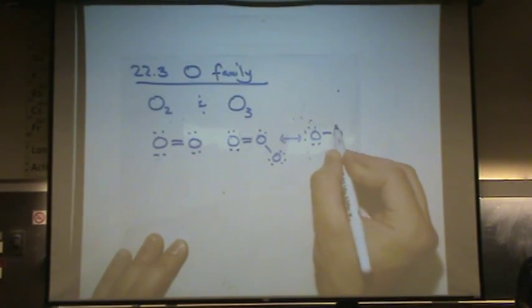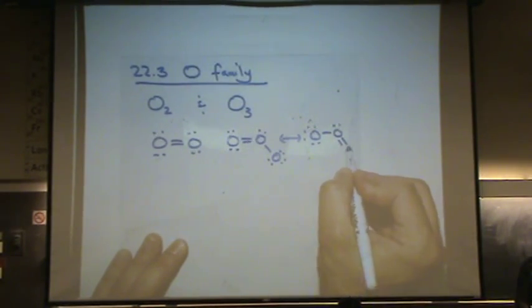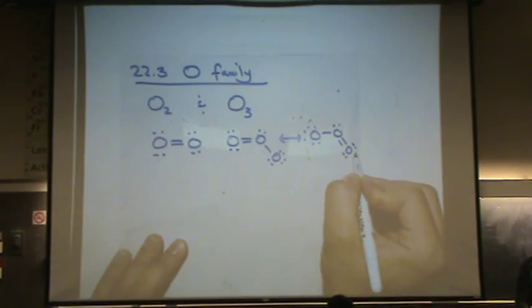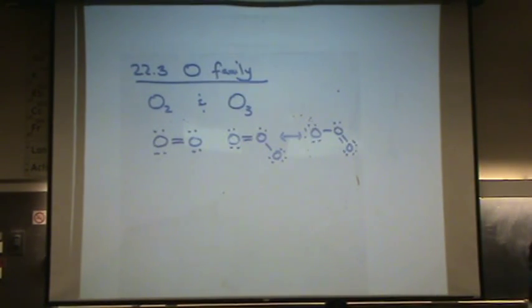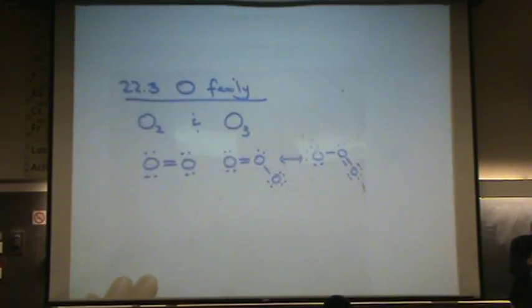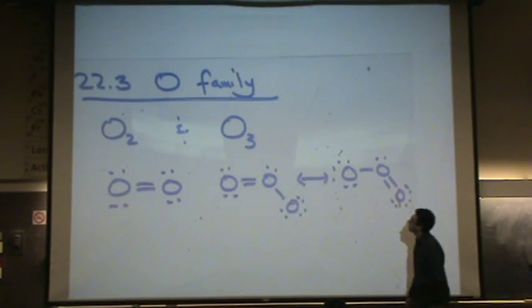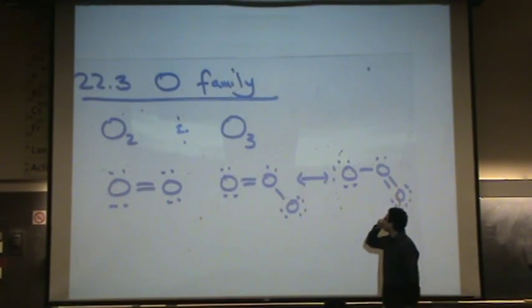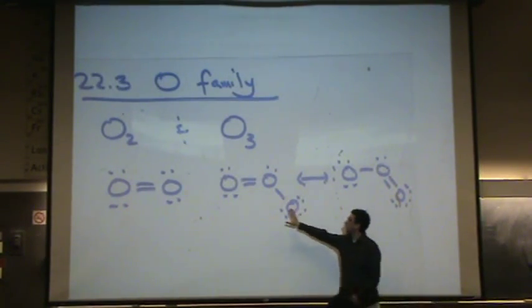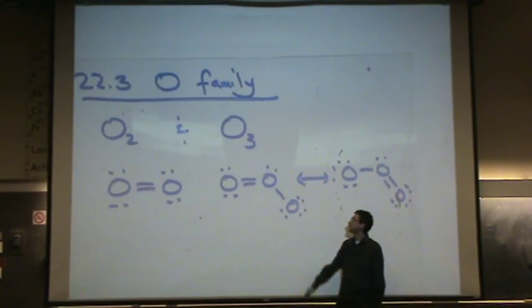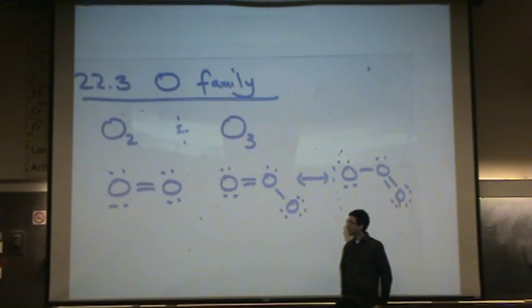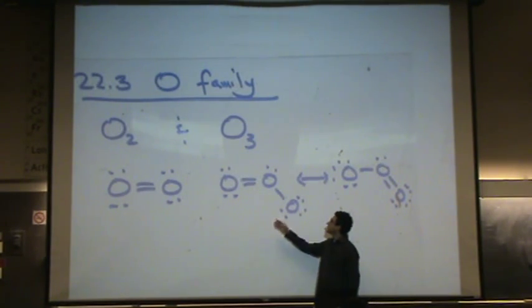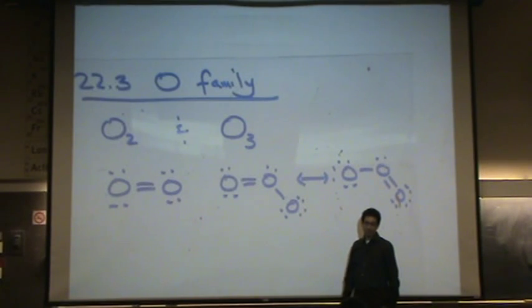As a resonance structure is what I'm drawing right here. Okay, let's look at the one on the right for a minute. The ozone. So these are resonance structures. What's the shape of this electronically? Trigonal. What's the molecular shape? That's bent. That's right.